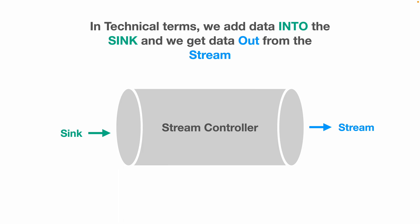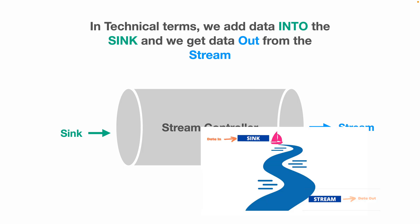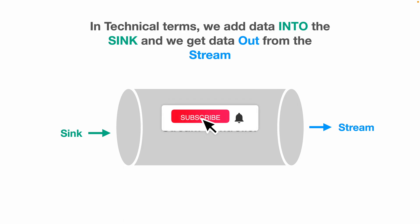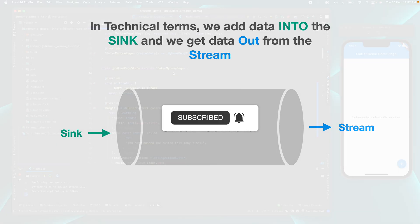As you can see, the Sink is on the left and the Stream is on the right. Sink is where we add the data — in the boat example, the place where the boat started is the Sink. The place where we receive the boat is the Stream. In between, we have a Stream Controller which handles the stream — we'll talk about the controller methods later in this video.